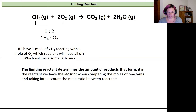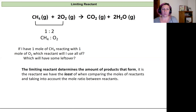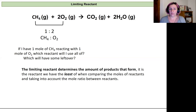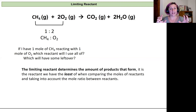One way to look at this is through an example: methane and oxygen combusting into carbon dioxide and water. In this reaction I need two moles of oxygen to react with every one mole of methane — a one-to-two mole ratio. With that in mind, if I have one mole of CH4 and one mole of O2 that I'm combining, which reactant will I use all of and which one will be left over?